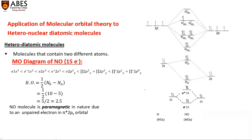When we draw the molecular orbital diagram, we note that nitrogen has atomic number 7, with electronic configuration 1s² 2s² 2p³, whereas oxygen has atomic number 8, with configuration 1s² 2s² 2p⁴.